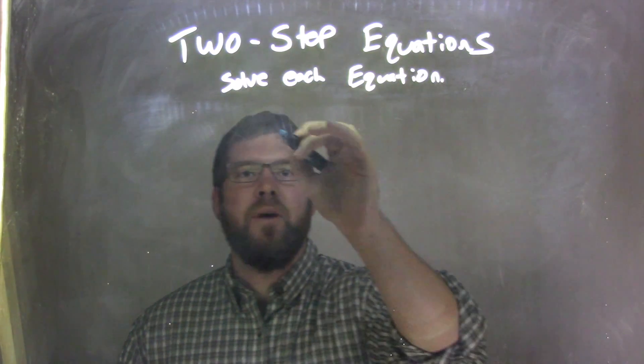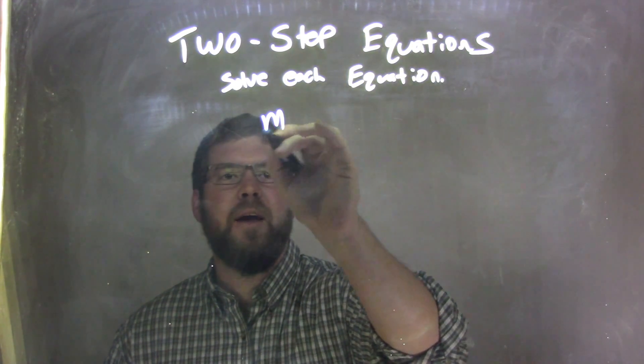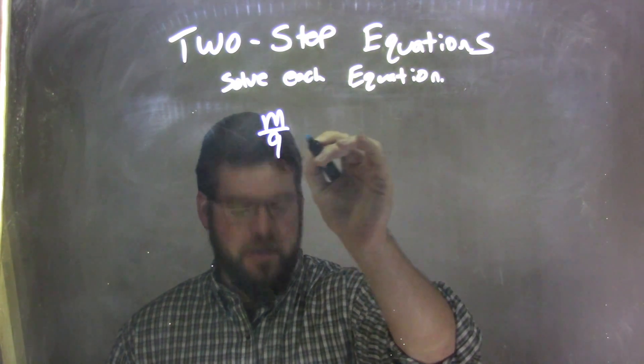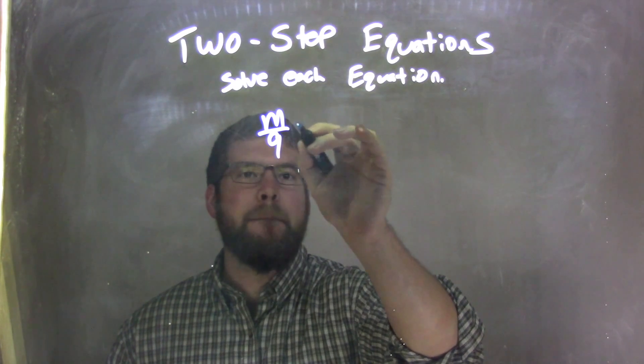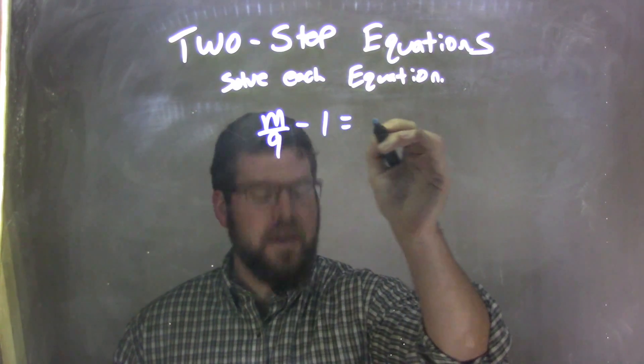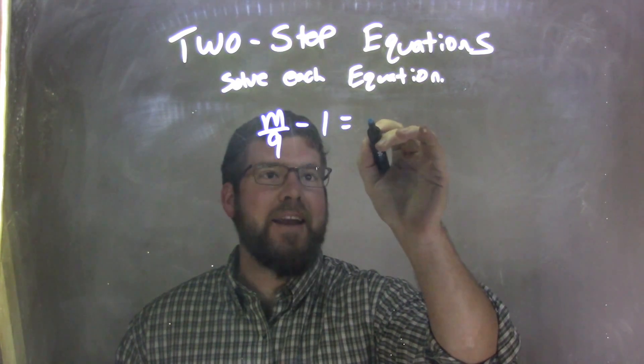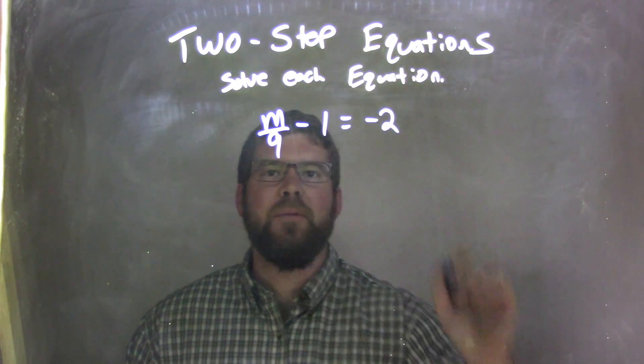So, if I was given this equation: m over 9 minus 1 equals negative 2.